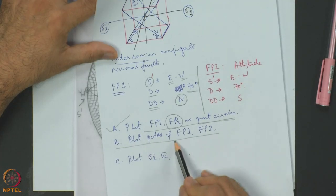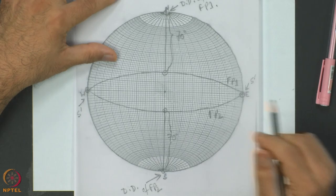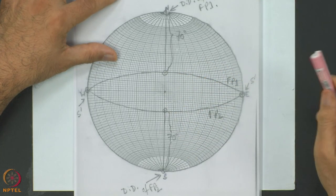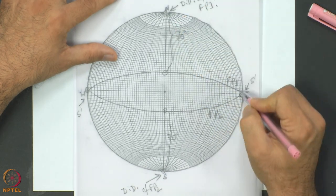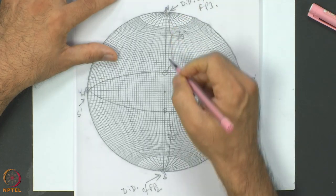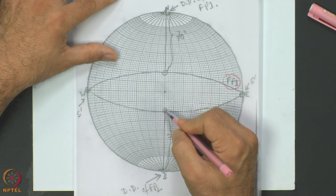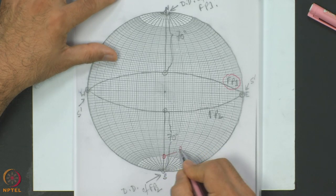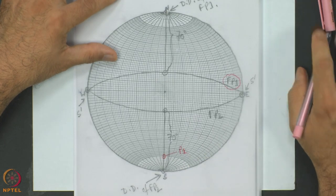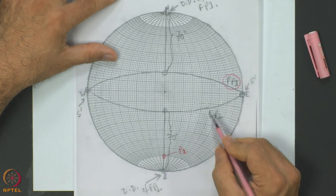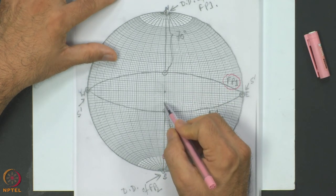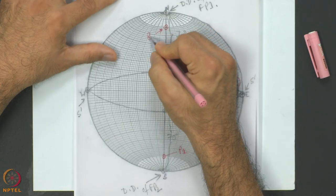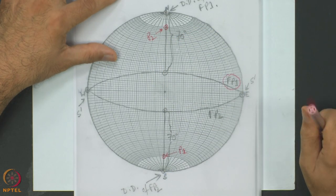We are now going to plot the poles of FP1 and FP2. To plot the pole of FP1, with the dip direction of FP1 matched with geographic north, I move 90 degrees inside and mark the point P1 - the pole of FP1. To plot the pole of FP2, I move 90 degrees inside from the south dip direction and mark P2 - the pole of fault plane 2.